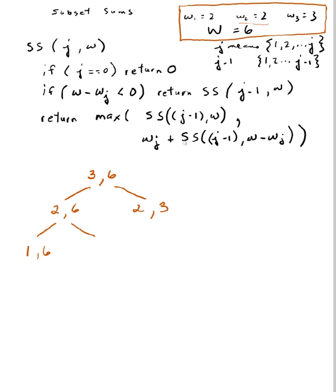And then the second call is if I use the 2, so that means I'll be adding in the weight of 2. Here's my result of the recursive call to 1. And then the weight take away what the weight of 2 is. So 6 minus 2 is 4.